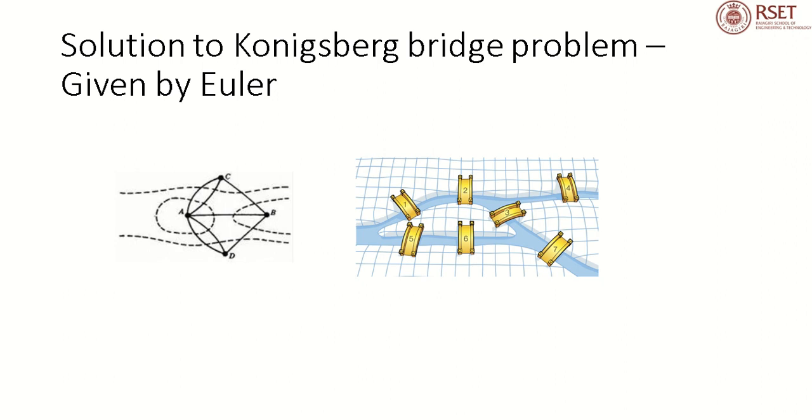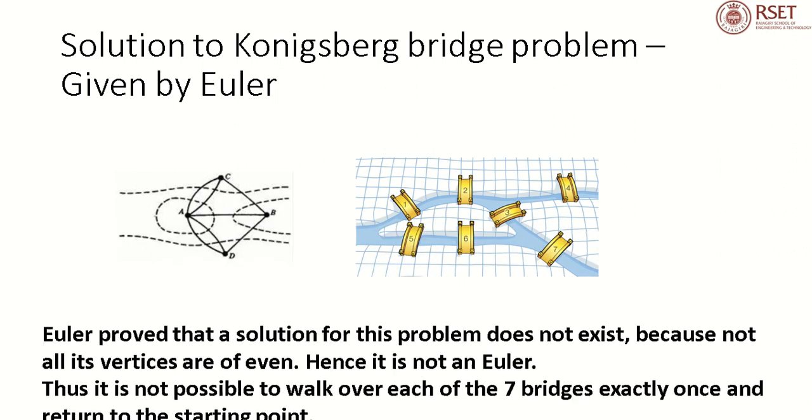From the figure, it is clear that the degree of each vertex: degree of A equals 5, degree of C equals 3, degree of B equals 3, and degree of D equals 3. The degree of all the vertices are not even. Therefore, we cannot find an Euler walk in this problem. Therefore, Euler proved that the solution for this problem does not exist because not all its vertices are of even degree. Hence, it is not an Euler Graph. Thus, it is not possible to walk over each of the seven bridges exactly once and return to the starting point.